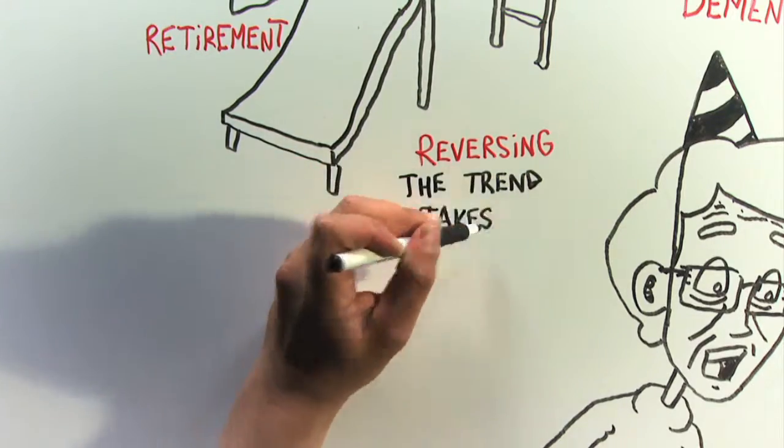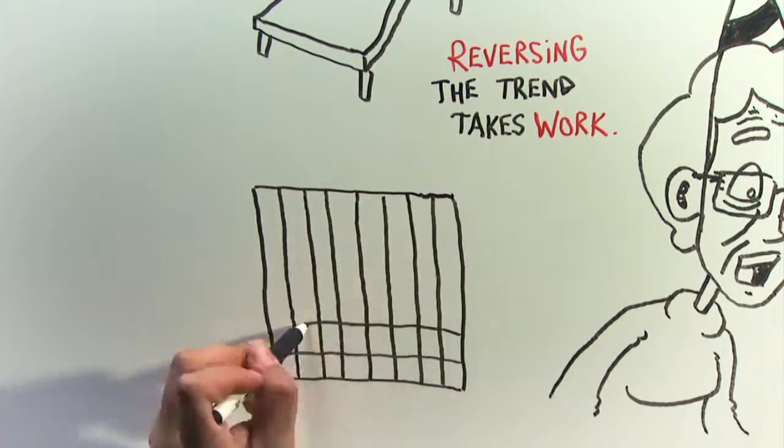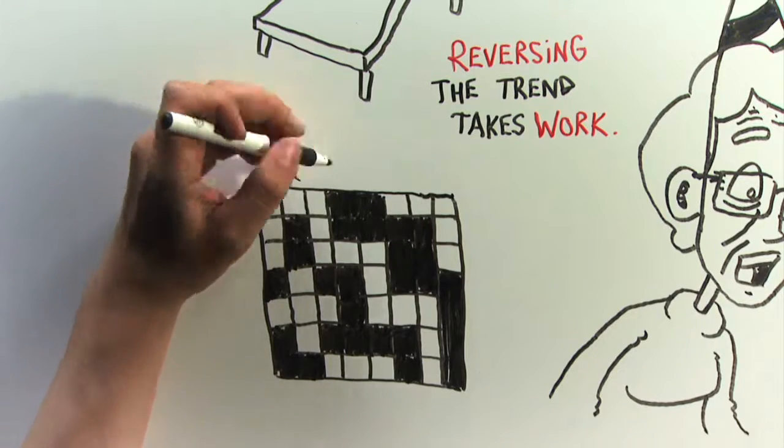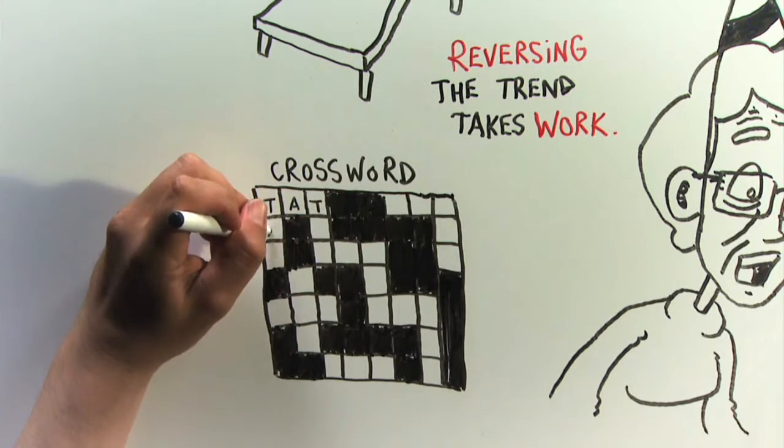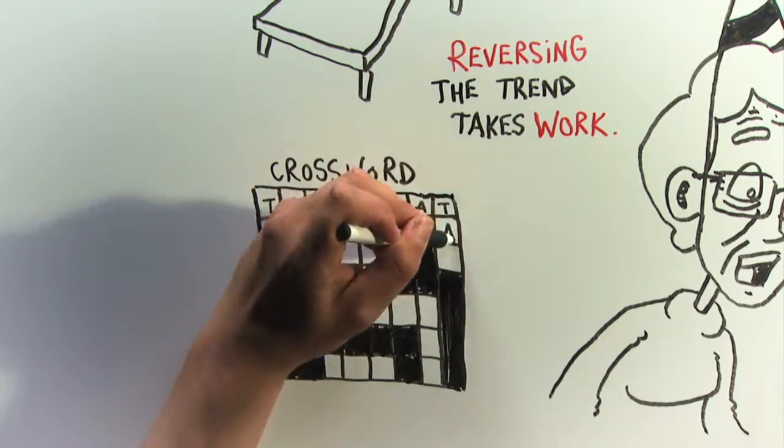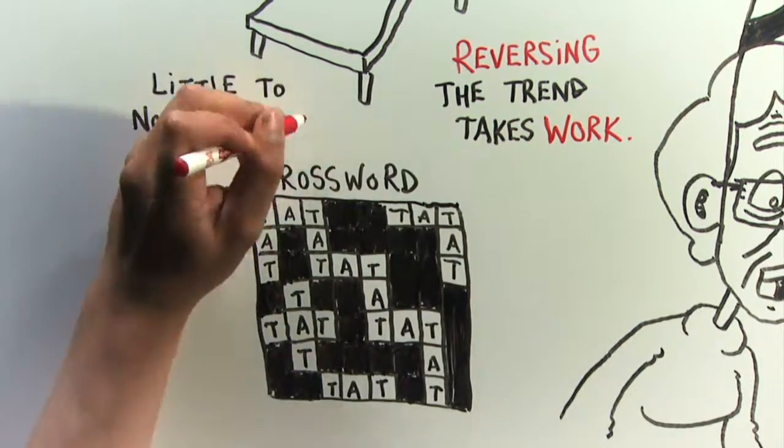Reversing the trend, however, takes work. And just doing crossword puzzles, while helpful, aren't really enough. Learning the three-letter word tat once might have been a challenge. After that, every time you use it requires little or no brain power.